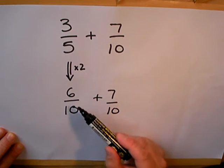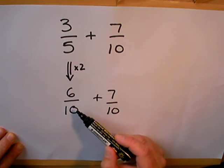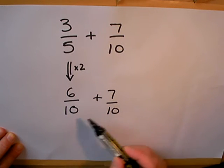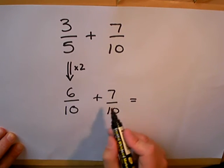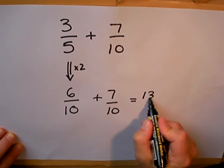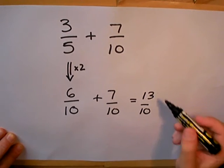So what have I done? I've changed 3 fifths into 6 tenths. Remember, it's the same fraction, just written in a different way. Now because these two numbers are exactly the same at the bottom, I can add them together. 6 tenths and 7 tenths makes 13 tenths.